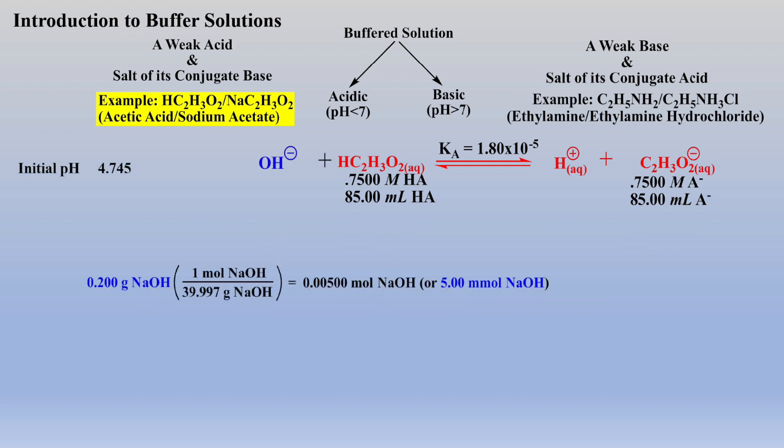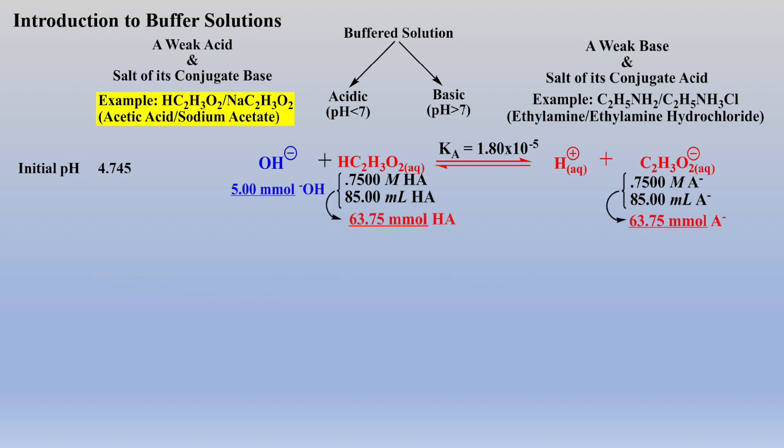Now let's add 0.2 grams of sodium hydroxide as our base, which is equivalent to 5 millimoles of sodium hydroxide, or 5 millimoles of hydroxide ions. Converting our initial amounts of both weak acid and conjugate base to millimoles allows us to examine the pre-equilibrium stoichiometric calculation.